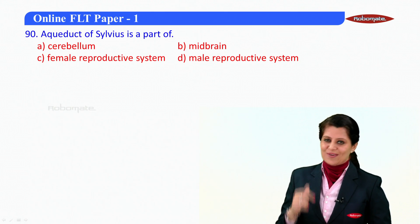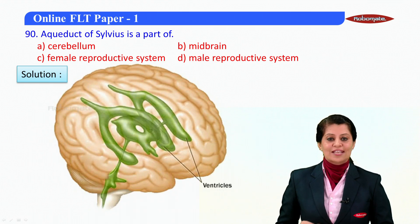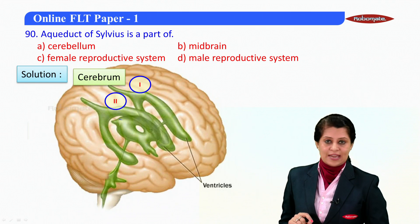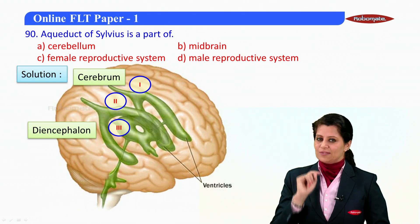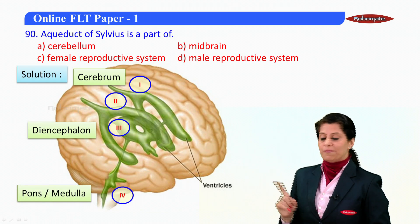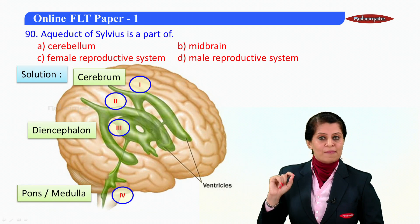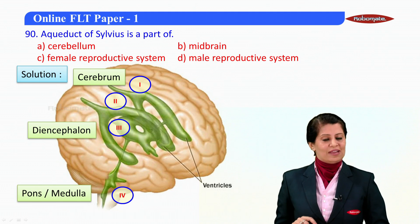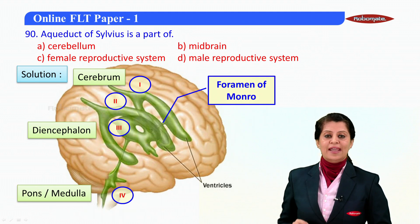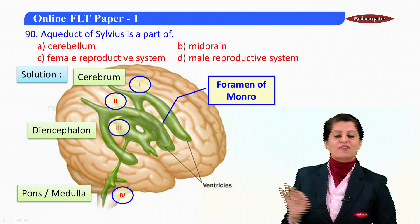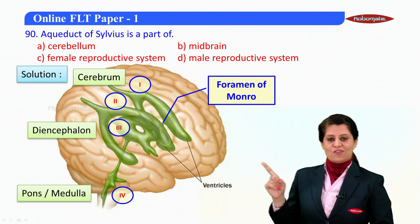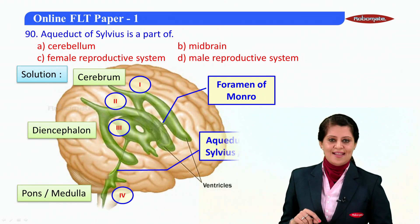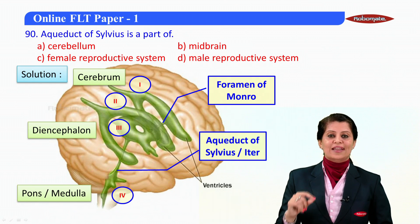The next question is: the aqueduct of Silvius, also called iter, is a part of which structure? There are four ventricles of the brain. The first and second ventricles are present in the cerebrum. The third ventricle is present in the diencephalon — the forebrain. The fourth ventricle is present in the hindbrain, extending from the pons to the medulla. The first and second ventricles, also called lateral ventricles, are connected to the third ventricle by the foramen of Monroe.